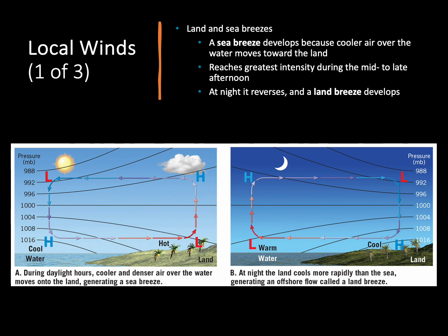At night, this is going to reverse and instead of a sea breeze, what we'll develop is called a land breeze. That's because at night, our land is cool — it's giving off all the heat it received during the day — while our oceans are still warm because they have that high specific heat. So now we have high pressure over the land and low pressure over the water, so the wind moves from the land to the water, taking that cool air from the land out over the oceans.